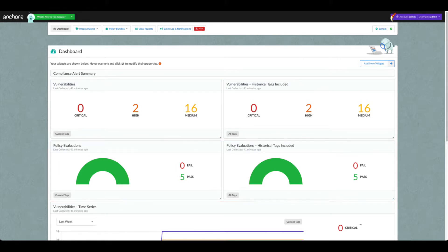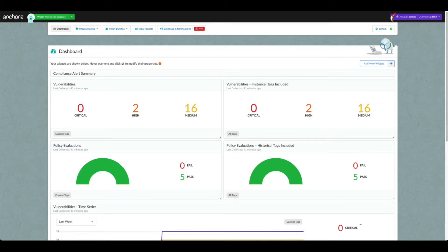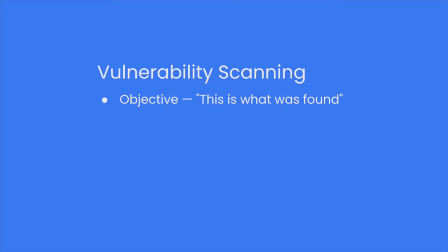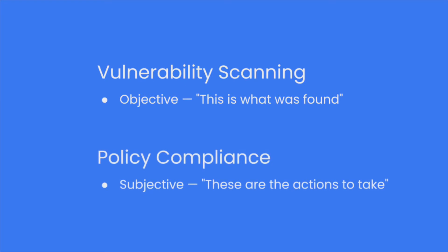It's important to understand the distinction between vulnerability scanning and policy compliance, as well as how these two activities are related. The process of identifying vulnerabilities is objective — it's simply a report of what vulnerabilities were found. In contrast, the process of policy compliance is subjective. Judgments are made about detected issues and actions are triggered as a result.